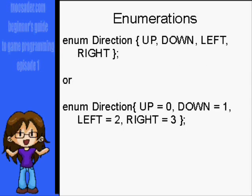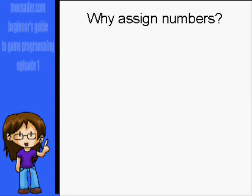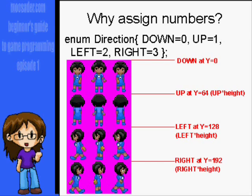Declaring enums looks like this. If you don't assign a number value to each one, it will be assigned an arbitrary number. The reason you may want to use numbers for directions are to tell where in the sprite sheet the image is.